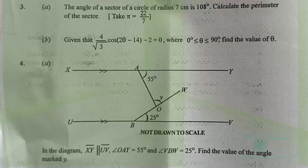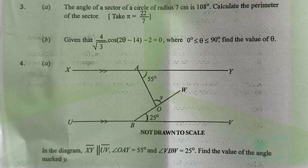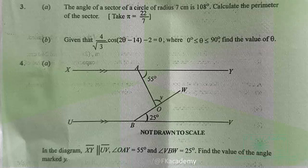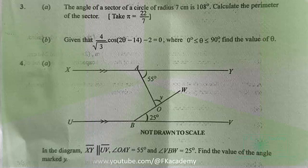Question 3: The angle of a sector of a circle of radius 7 cm is 108 degrees. Calculate the perimeter of the sector. Also, given that 4cos(2θ − 14°) − 2 = 0, find the value of θ where θ is in the first quadrant.